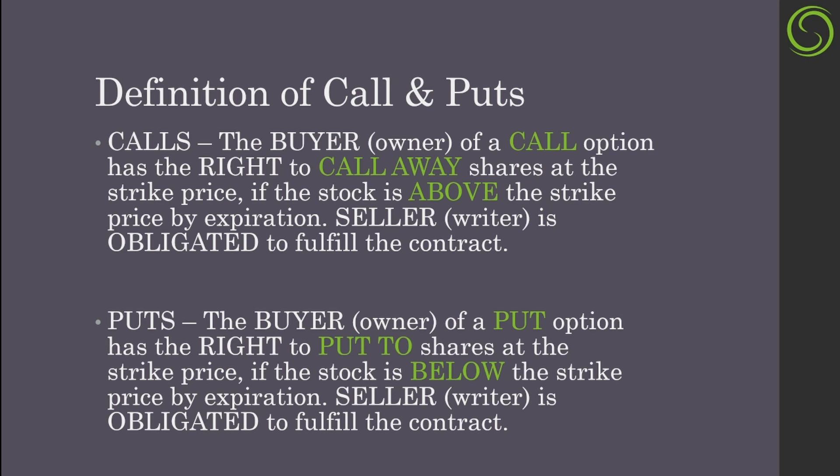For puts, let's say I want to buy insurance on positions that I own. So let's say I buy the strike price of $40 and the stock winds up dropping to $20. Well, I don't want to have to sell my stock at $20. I can use my put contract and put my shares to somebody at $40. One allows you to buy away from somebody at a discount — that would be a call option — and the other allows you to put to somebody at a specific price, which would be a put option.